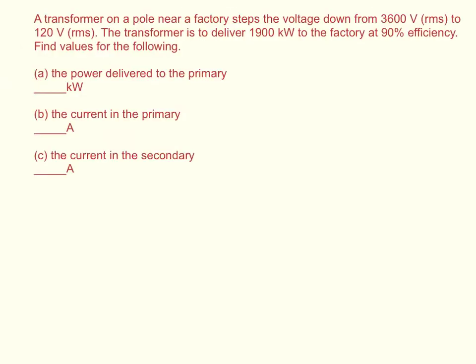A transformer on a pole near a factory steps the voltage down from 3,600 volts RMS to 120 volts RMS. The transformer is to deliver 1,900 kilowatts to the factory at 90% efficiency. Find values for the following.